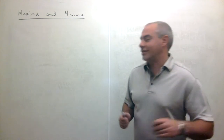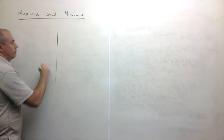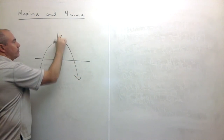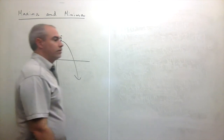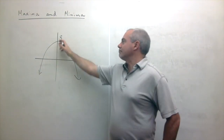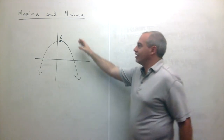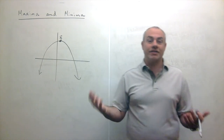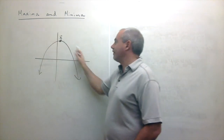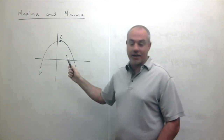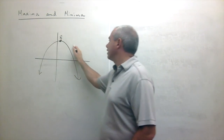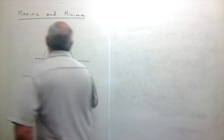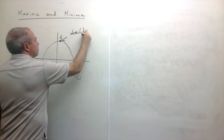Let's draw a function and think about what it means to be at an absolute extreme. Imagine a little stick figure standing on this curve. He looks to his left and to his right and asks: am I standing at the highest point on this curve? He looks around and discovers that yes, in fact, he is standing at the very highest point. No matter which direction he looks, he doesn't see anything higher than him, and he concludes that he's standing on an absolute maximum.